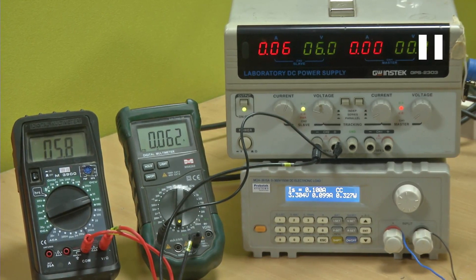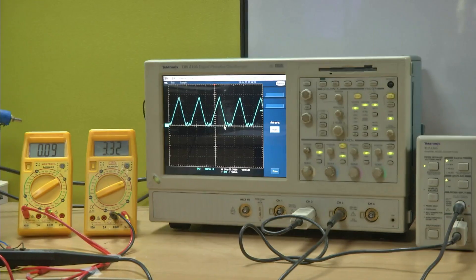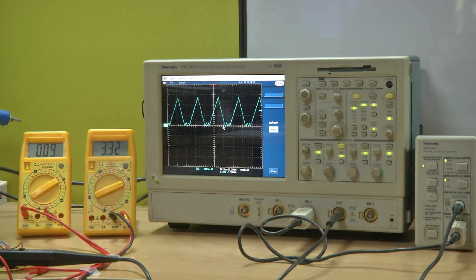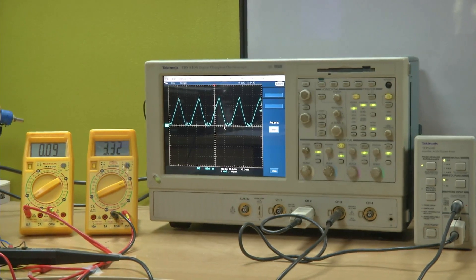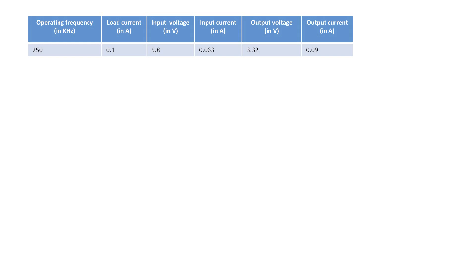5.8 volts is the input, 63 milliamperes is the input current — that is the power at the input. The switching current is at a frequency of 250 kilohertz, which can also be changed to 500 and so on. The load voltage is 3.3 volts always — you want the buck converter to give you a fixed 3.3 volts at the output. The load current was set for 100 milliamperes, but it appears it has taken about 90 milliamperes, which is also okay. Now you know input and output, so it is easy for you to calculate the efficiency.